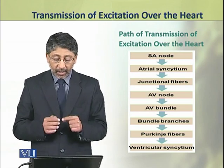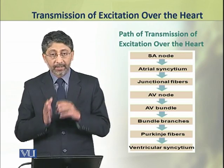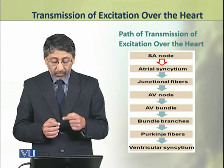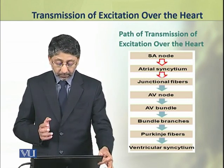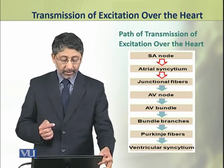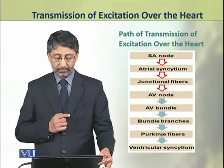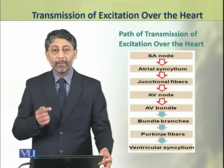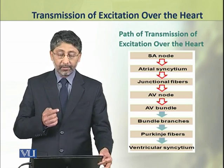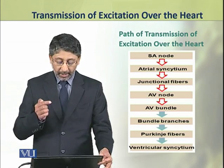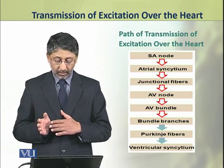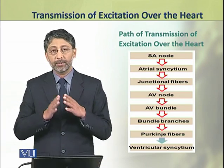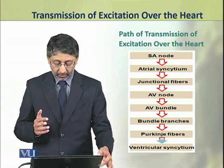We shall have an overview of the path of transmission of excitation over the heart. The excitation generated in the sinoatrial node is first transmitted to the atrial myocardium. From atrial myocardium, through the junctional fibers, it is transmitted to the atrioventricular node. From the bundle of His, the transmission occurs to the bundle branches — right and left bundle branches. These bundle branches transmit excitation to the Purkinje fibers, which then transmit excitation to the ventricular musculature.